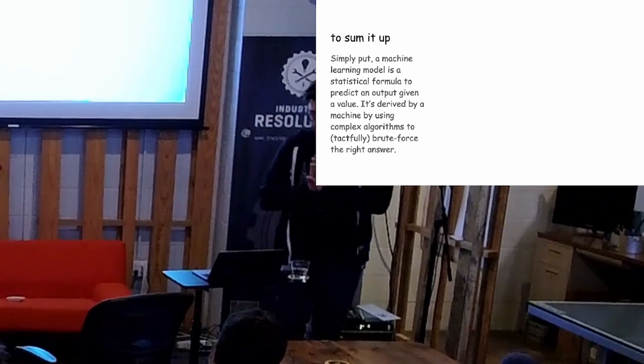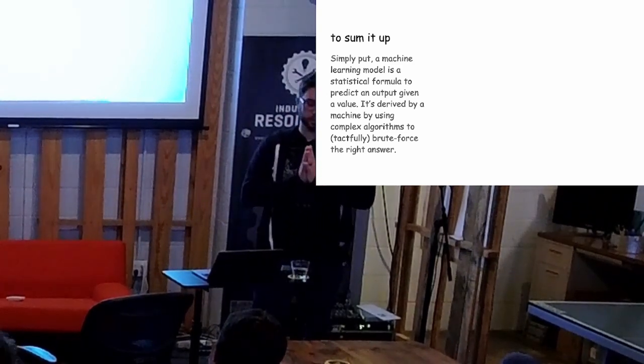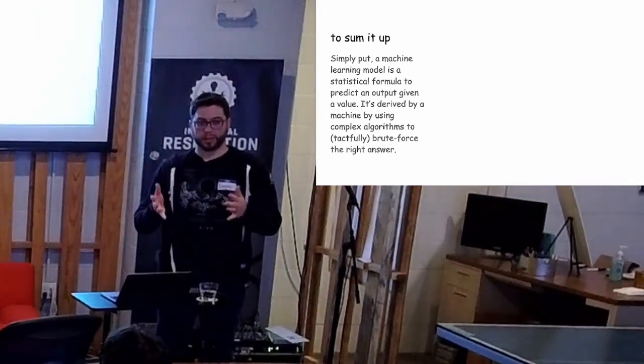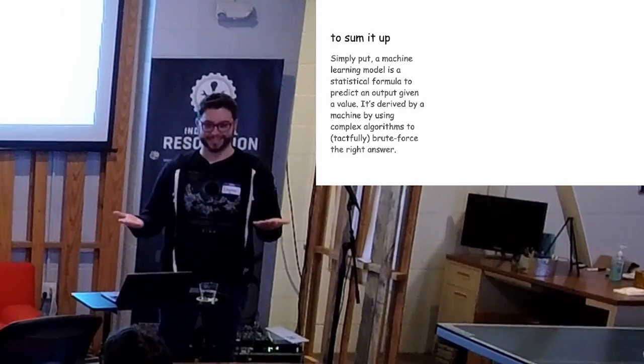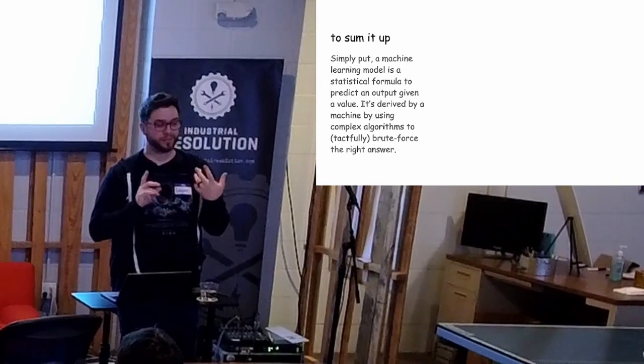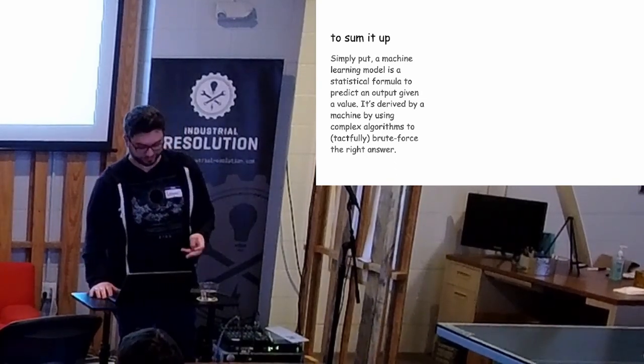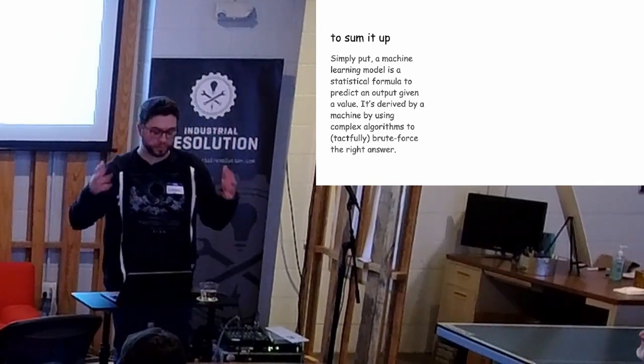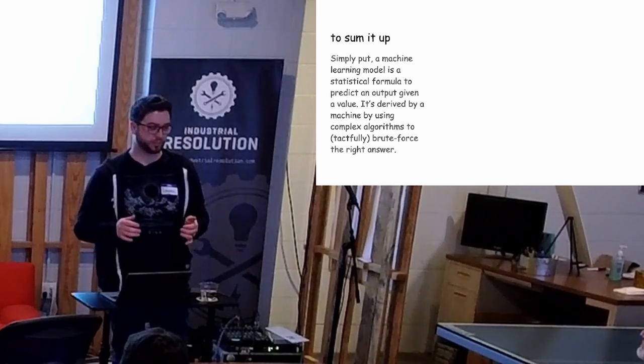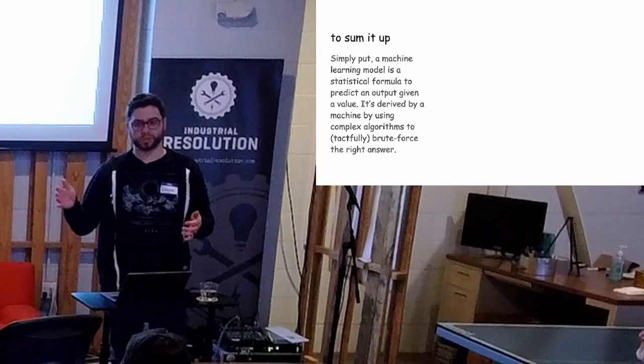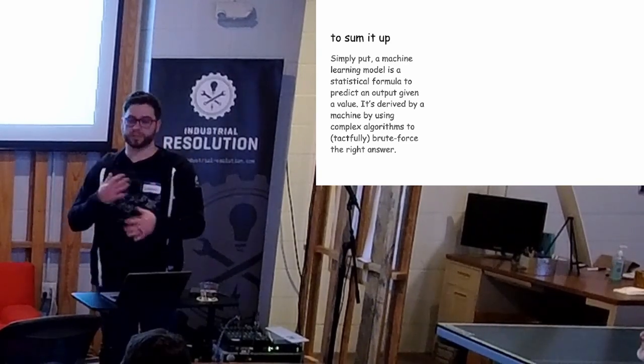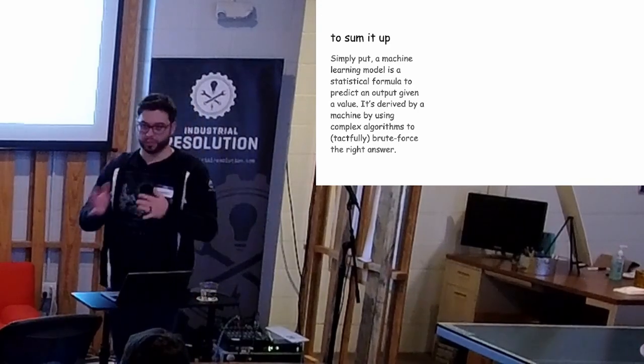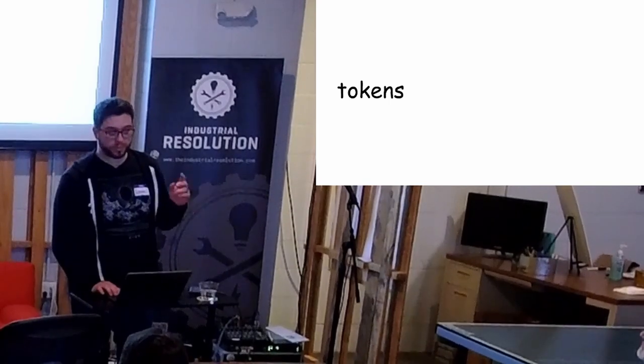So to sum up models, right? Simply put, it's just a statistical formula to predict an output given a certain input. That's all like under the hood, under all the glamour. AI and machine learning are just really complicated statistics. And if any of you have taken stats in college, it's like that, but way crazier. So the model's derived by the machine using complex algorithms to tactfully brute force the answer. And I put it that way because more complex operations are going to take longer because it's trying to adjust itself as it goes on. And it's trying to say like, what values can I tweak on my own to then get the appropriate answer, or at least come within an acceptable loss rate. Any questions on models before we go to...